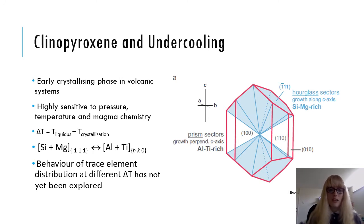Sector zoning in clinopyroxene is illustrated in the figure to the right here, and it's characterised by the presence of silica magnesium rich hourglass sectors, which are shown in blue, and aluminium titanium rich prism sectors, which is shown in white, and lie perpendicular to the hourglass sector. The formation of sector zoning is attributed to the degree of undercooling, with the presence of sector zoned clinopyroxene typically indicating relatively low degrees of undercooling, so less than about 45 degrees.